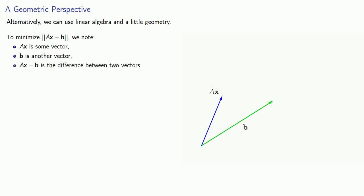Alternatively, we can use linear algebra and a little geometry. So to minimize this norm ||Ax - b||, we might note the following. Ax is some vector, b is another vector, and Ax - b is the difference between two vectors. And if we look at this geometrically, this vector Ax - b is the vector that joins b to Ax.